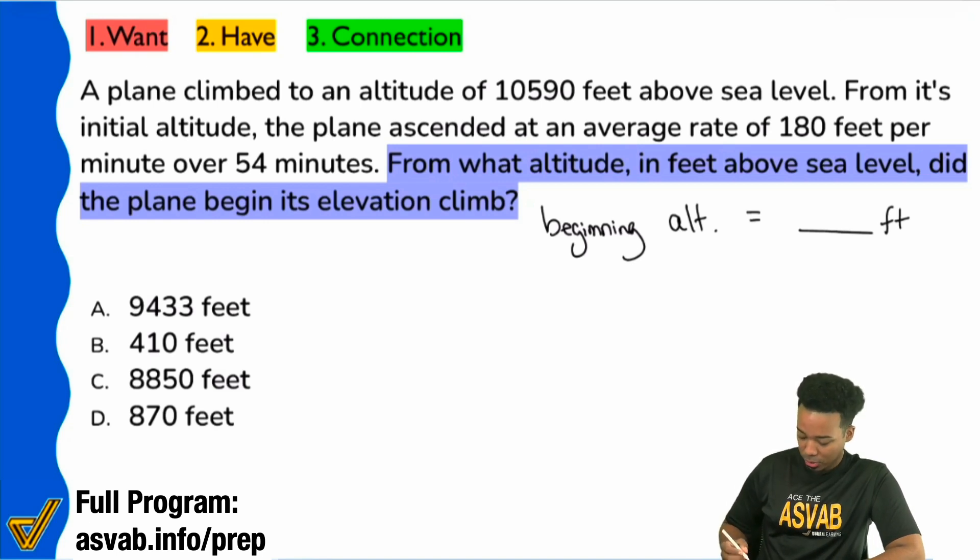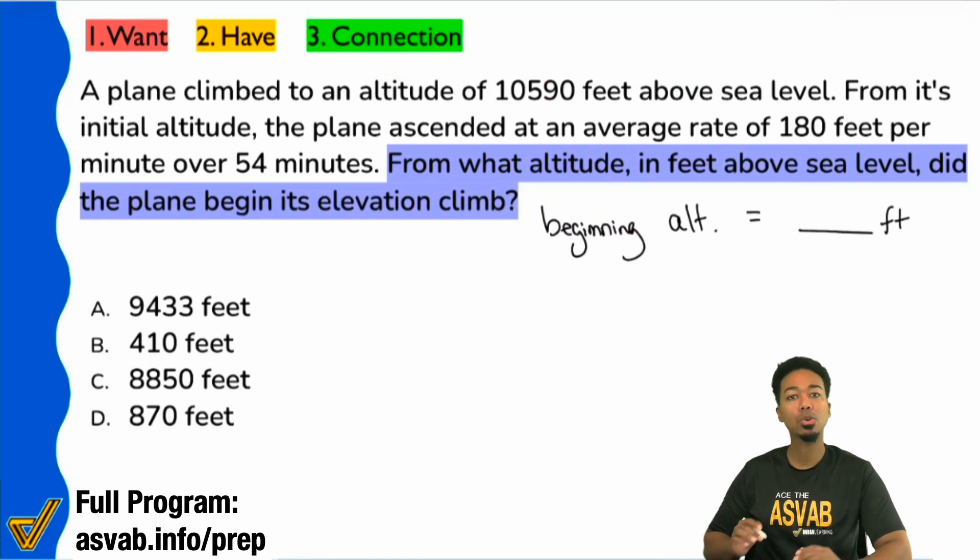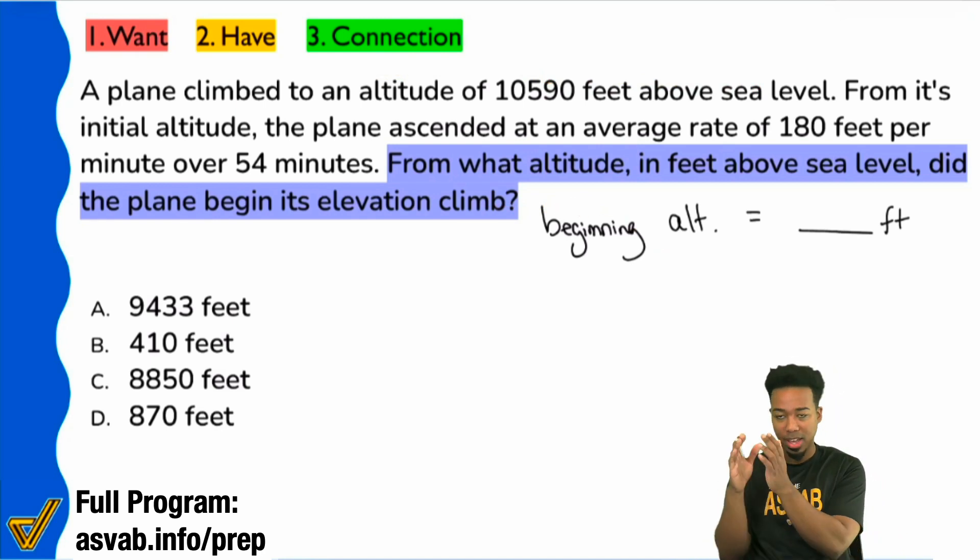So let's read through the information here and we see that the first sentence says that a plane over here climbed to an altitude of 10,590 feet above sea level. So it says that it climbed up to this altitude. And here's the beginning altitude that we're looking for. So right away, it sounds like we have a beginning, we have an end, and I'm certain that the rest of this information is going to talk about what happens in the in between. And because I see that, we're looking for the beginning, we have an ending amount, and we're looking for what happens in the between. That means we're dealing with a linear equation word problem.